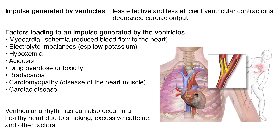Factors leading to an impulse generated by the ventricles include myocardial ischemia, which is reduced blood flow to the heart, electrolyte imbalances especially low potassium, hypoxemia, acidosis, drug overdose or toxicity, bradycardia, cardiomyopathy which is disease of the heart muscle, and cardiac disease.